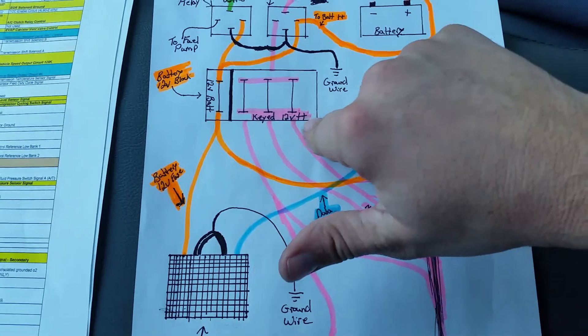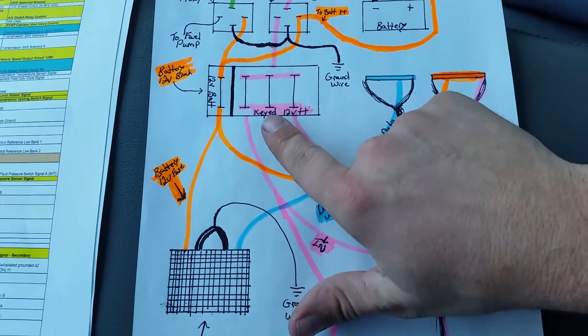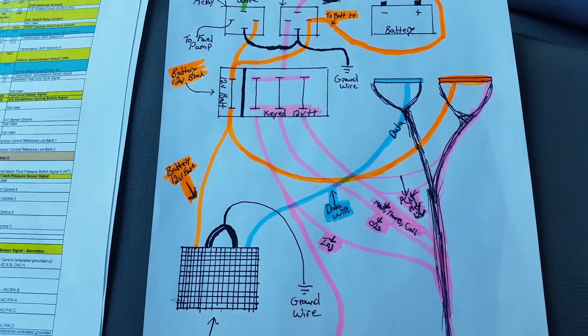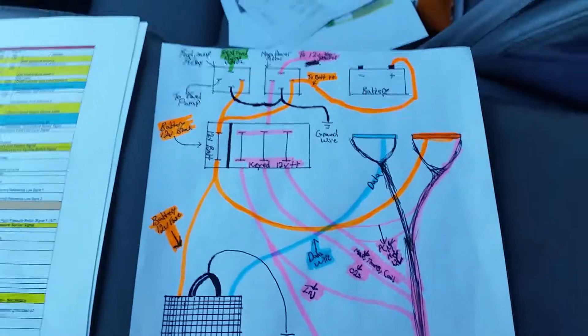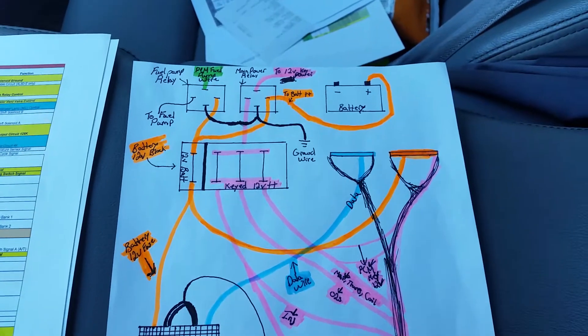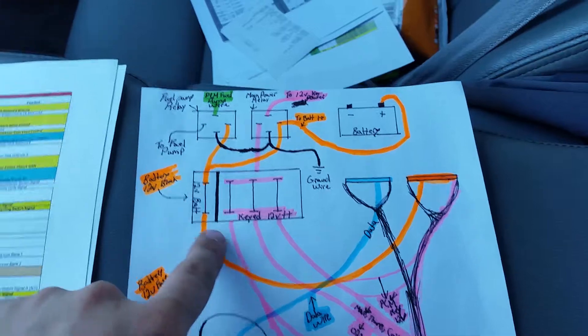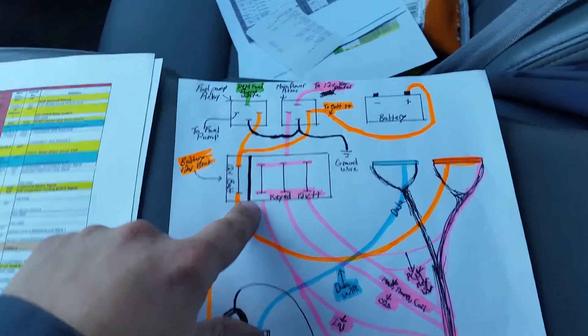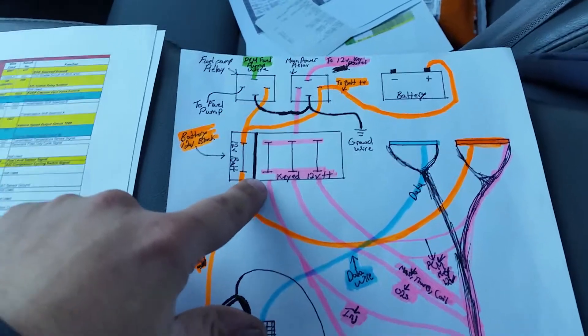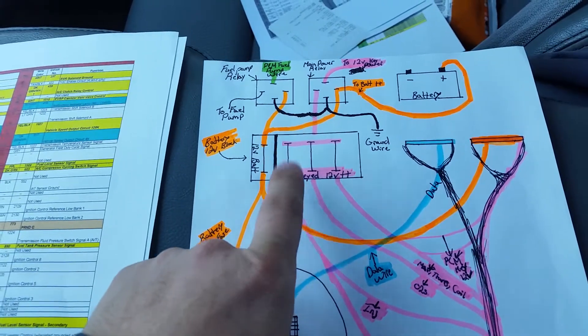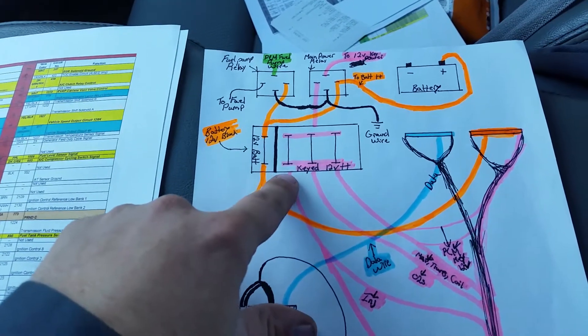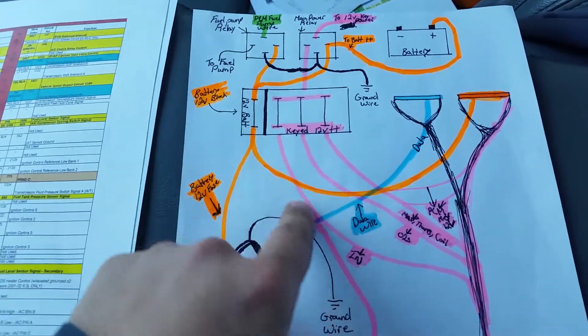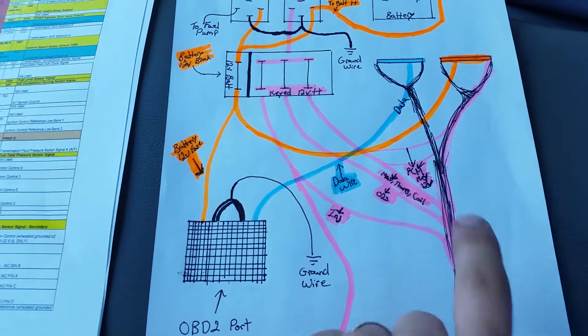Your injector wires, coil wires, mass airflow sensor, trans - all those will be pink also. All these injector wires, you'll bunch those together and run it up to your 12-volt keyed power. When you turn the key on, you have power to it, and it runs down into your harness to each one of the injectors.